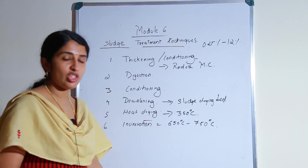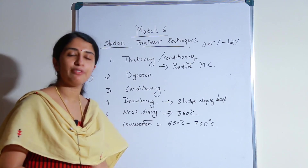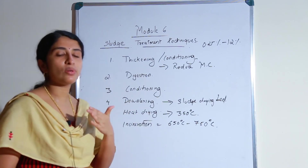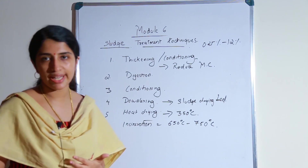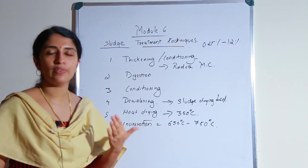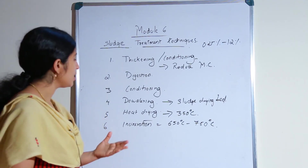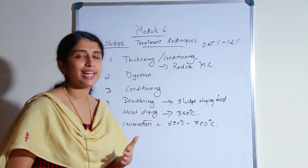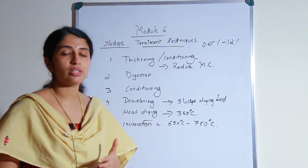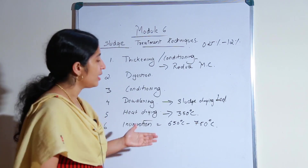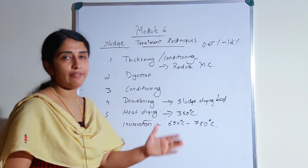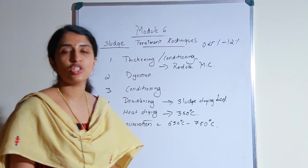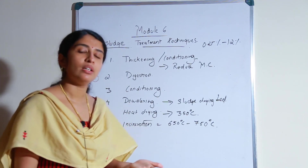The fifth step is heat drying, where we dry the sludge at a temperature of 350°C using a rotary kiln or a furnace. In that process the volume of the sludge reduces greatly and the moisture content is reduced to a very small amount. The sixth and last step is incineration, where the dewatered and dried sludge is burnt off to remove all organic matter and microorganisms present in the sludge. It is done at a temperature of 650°C to 750°C. After these six steps we can safely dispose the sludge to a land area or a water body.